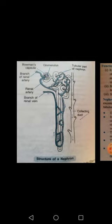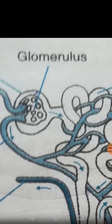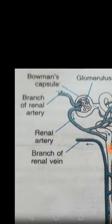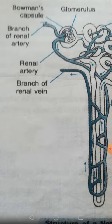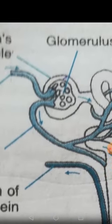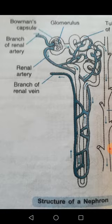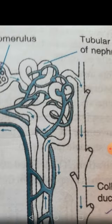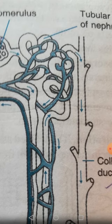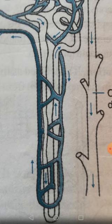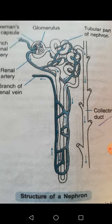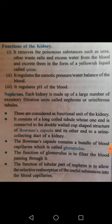The Bowman's capsule contains a bundle of blood capillaries called the glomerulus. Inside the Bowman's capsule, you can observe a network of blood capillaries — a branch of the renal artery forms a huge network inside the Bowman's capsule, which is called the glomerulus. After this, the nephron has a long coiled tube, and a U-shaped structure forms called Henle's Loop, or the Loop of Henle. Finally, it opens into a collecting duct.